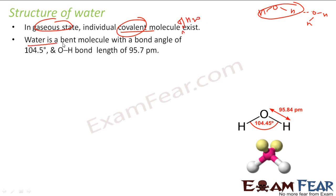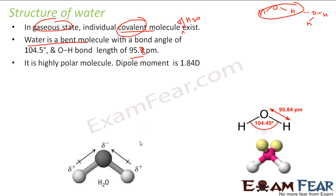Water is a bent molecule — we studied this in the hybridization and shapes chapter using VSEPR theory. The bond angle is 104.45 degrees and the bond length is 95.7 picometers. The structure has oxygen with two lone pairs and two hydrogens. It has a very high dipole moment of 1.84 D, because oxygen is more electronegative — there is a partial negative charge on oxygen and partial positive charge on hydrogen.